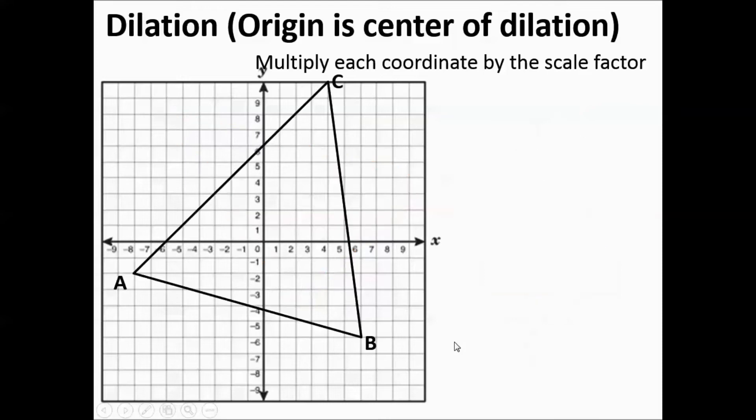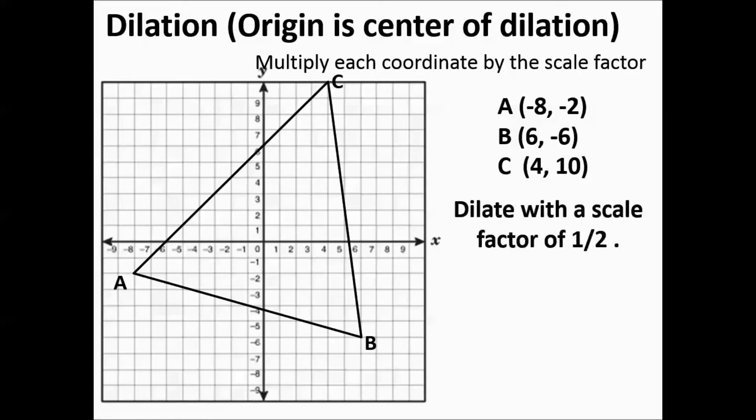So we'll do another one here. We've got this big triangle. We've got the points listed already. We're going to be dilating this one with a scale of 1 half. 1 half times each coordinate. Another way to think about it would be to say that you are dividing each item by 2.